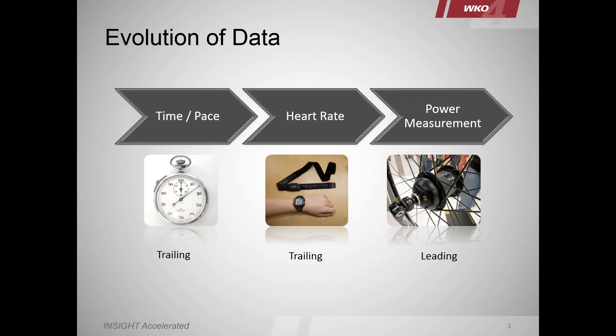Data tracking basically started with time and pace, then evolved to heart rate, and then evolved to power measurement. At the core of the evolution of data are those three. The reality of using time, pace, and heart rate was that it was trailing data. Since it was trailing data, analytics were very challenged — you're looking at an effect happening first and the data happening later. Power reversed that paradigm.